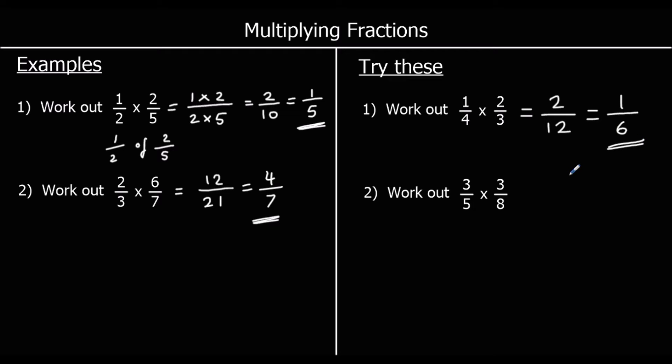Question two: work out three-fifths times three-eighths. Again, times the top — three threes are nine. Times the bottom — five eights are forty. And nine and forty aren't both in any times table apart from the ones, so we can't simplify it any further. So nine-fortieths is our answer.